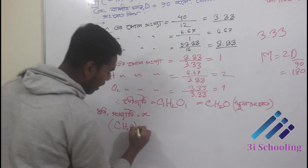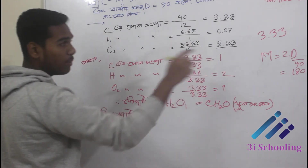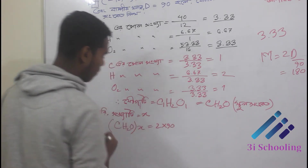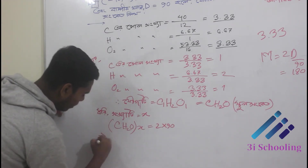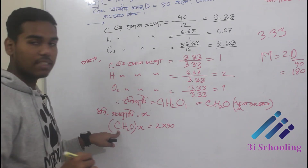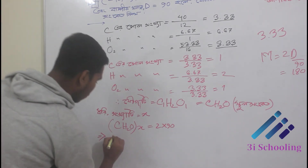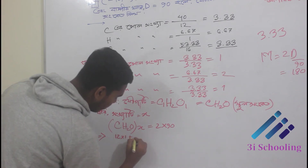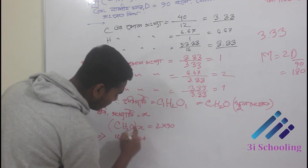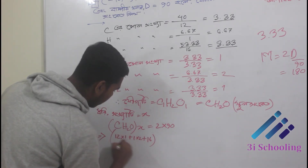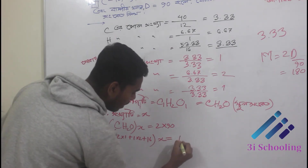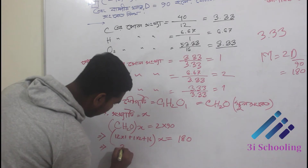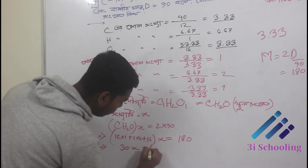CH2O into X equals M equals 3, that one is 2 into 90. So we can see that X is the main part. The carbonate power is 12 into 1 plus hydrogen 1 into 2 plus hydrogen 1 into 62, into X equals 180. So the carbonate power is approximately 300 into 180.